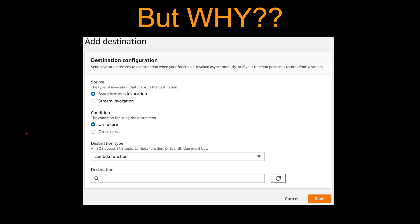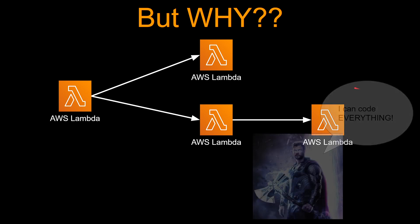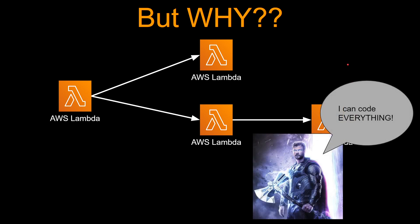But why? Why can't you just code everything in Lambda? By using the newly released Lambda destination, you can call another Lambda from one Lambda asynchronously. So this is the screenshot for Lambda destination, and you can see you can asynchronously call another Lambda. So theoretically, you can code a bunch of Lambdas and invoke each other either synchronously or asynchronously and create a workflow.